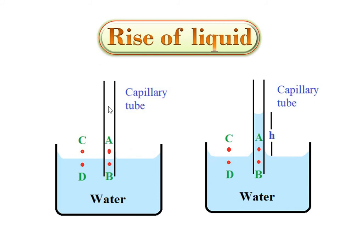When the capillary tube is dipped in a liquid that partially or completely wets the solid, capillary rise is observed up to some height H. We define four points: Point A is just above the concave meniscus inside the capillary, Point B is just below the concave meniscus, Point C is just above the free surface of the liquid outside the capillary, and Point D is just below the free surface outside.